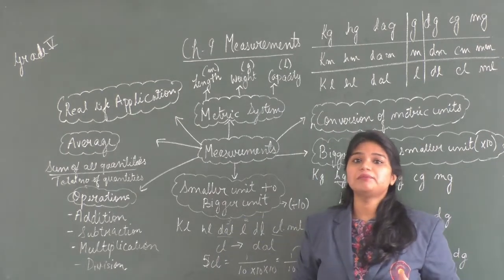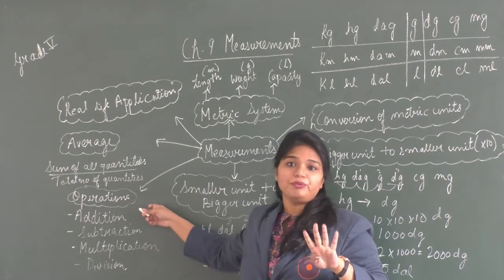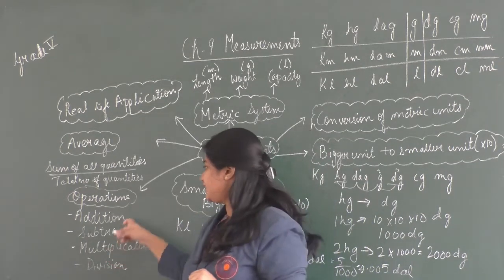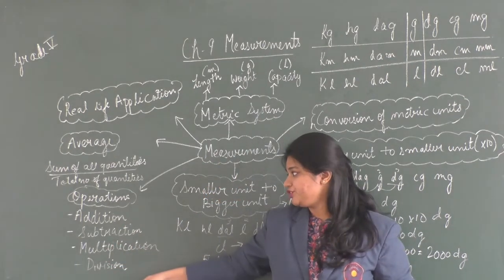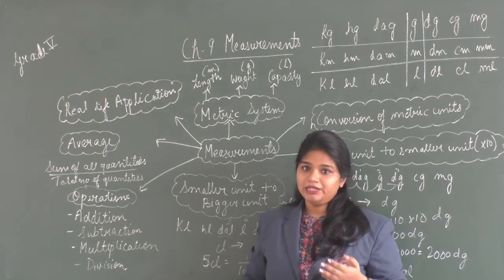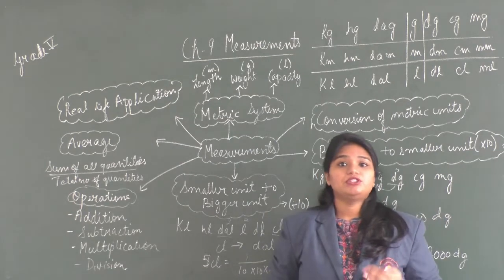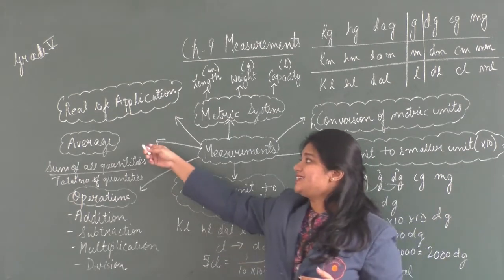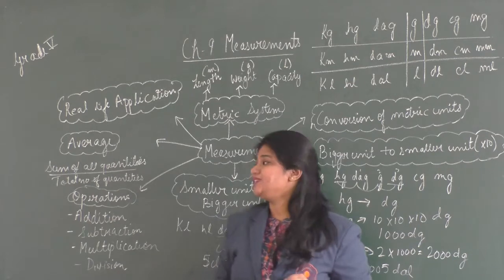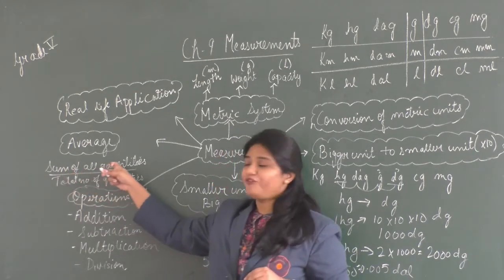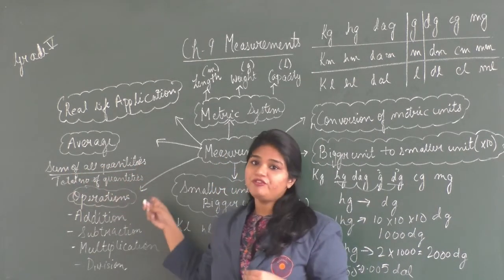After learning about conversion of metric units, we learned about the four operations with metric units: addition, subtraction, multiplication, and division. We will look at each in detail. We also learned about the topic of average. The formula to calculate average is: sum of all the quantities divided by the total number of quantities.